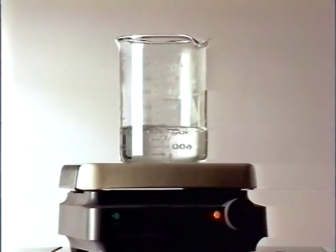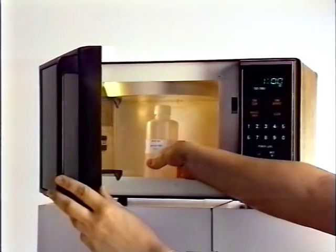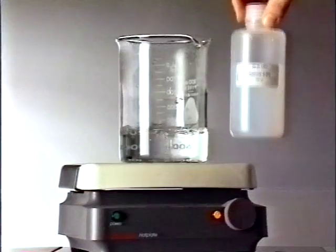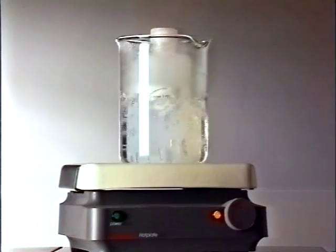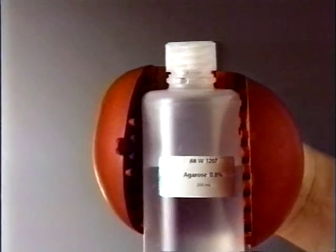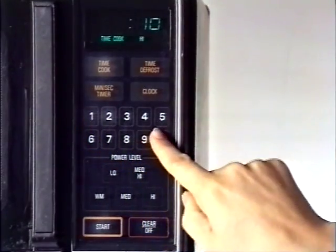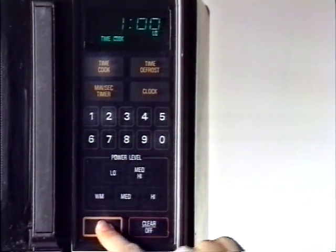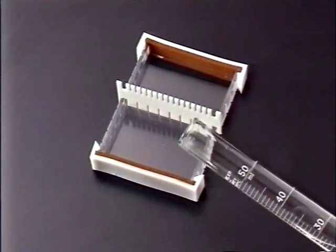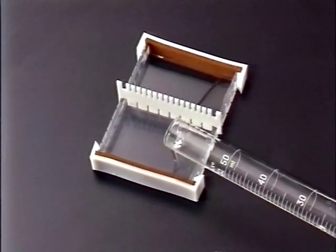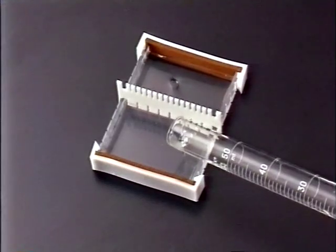Melt the prepared agarose in either a hot water bath or microwave. If you use a hot water bath, loosen the cap on the agarose bottle and place it in a 100 degree centigrade water bath until the agarose is completely melted. If you use a microwave, loosen the cap on the agarose bottle and heat in 1 minute intervals on low power until the agarose is completely melted. Pour enough melted agarose into the tray to cover the bottom to a depth of 3 to 4 mm. This will require approximately 25 ml of melted agarose gel.